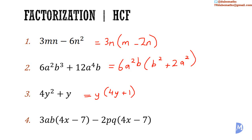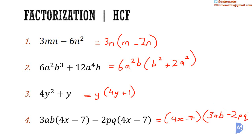Example four: 3ab multiplied by 4x minus 7, added to negative 2pq multiplied by 4x minus 7. What is the HCF? 3 and 2 have nothing in common; ab, p, and q are not common to both terms. The only thing common to both terms is 4x minus 7, so that is the HCF. What do I multiply 4x minus 7 by to get 3ab times 4x minus 7? I multiply it by 3ab. And what do I multiply 4x minus 7 by to get negative 2pq times 4x minus 7? I multiply it by negative 2pq. So the factors are 4x minus 7 and 3ab minus 2pq.